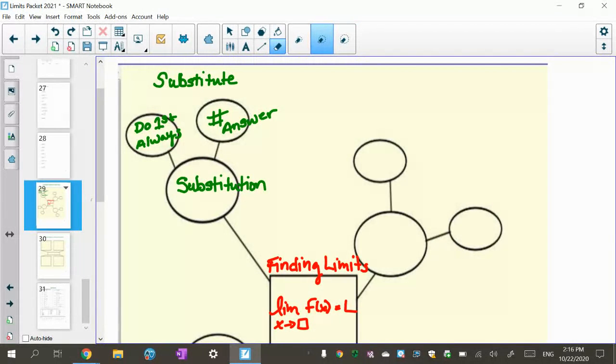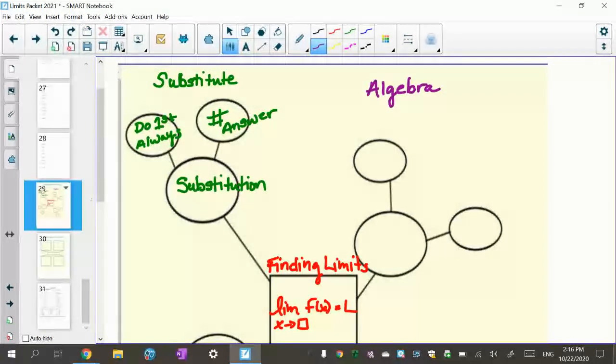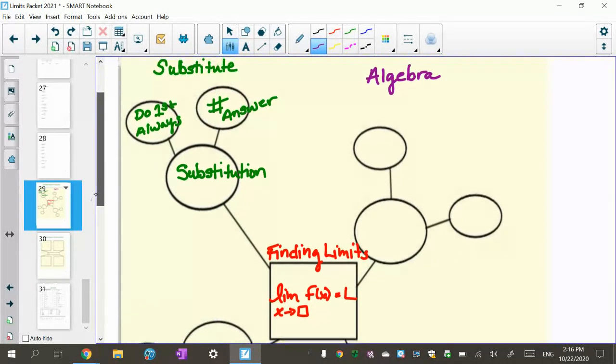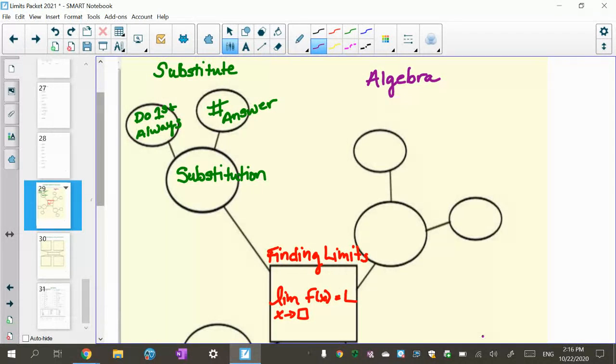Now the next thing, the big thing that you do, and I'm going to change color here and make this pretty, is the algebra part. If you substitute it in and you get an indeterminate form of 0 over 0 or infinity over infinity, you can try doing some algebra. This usually happens when you have a rational function. So if you have a rational function that gives 0 over 0, what do I do? So I substituted first, and then I got this rational function.